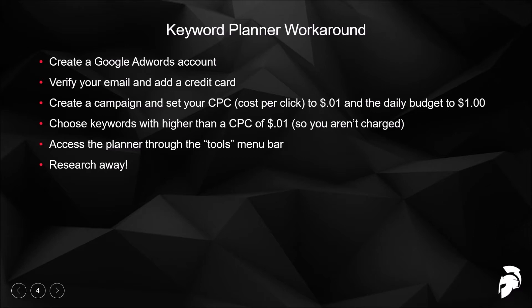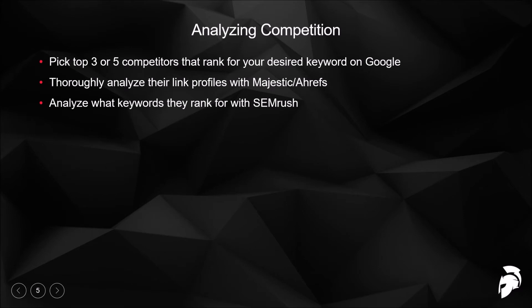To get exact search volumes in Keyword Planner without spending money: create a Google AdWords account, verify your email, and add a credit card. Then create a campaign, set your cost-per-click to one cent and daily budget to one dollar. Choose keywords with a higher CPC than one cent — since their actual CPC is at least a dollar or two, you won't be charged. Then simply access the planner and you're ready to research.